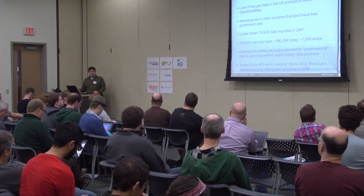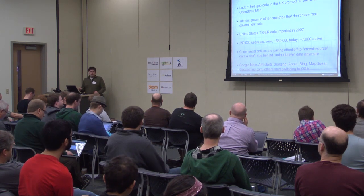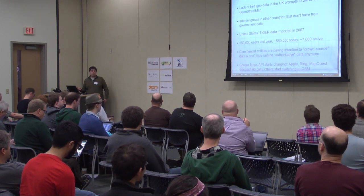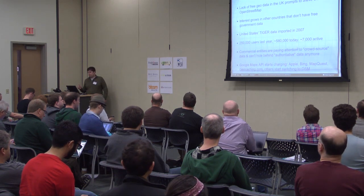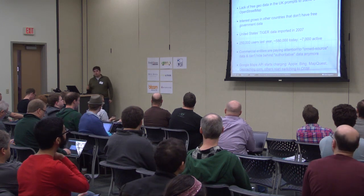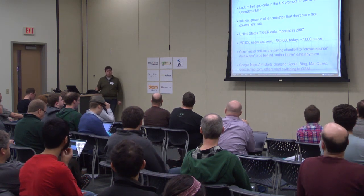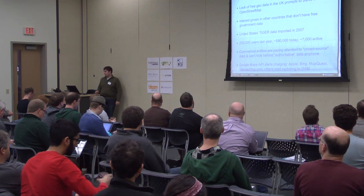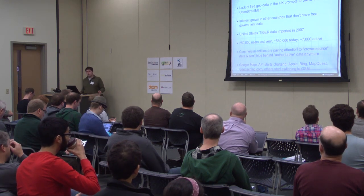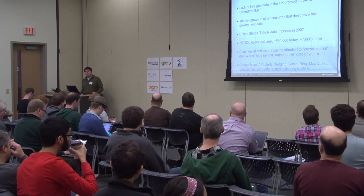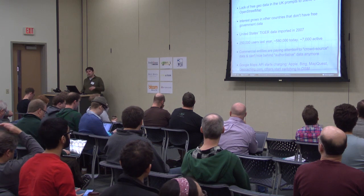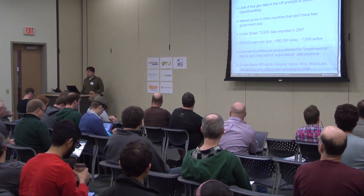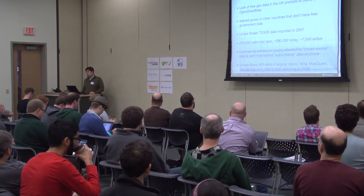Last year we had 250,000 registered users. This year we have almost 600,000. And over a rolling week average, we have about 7,000 people active. That's quite a few people — not as many as I would like — adding data on a daily basis to the OpenStreetMap database.